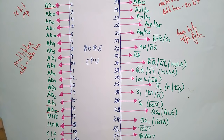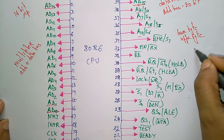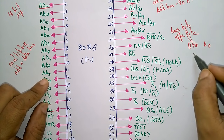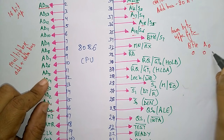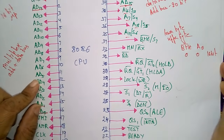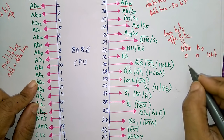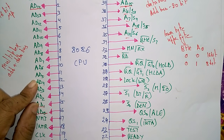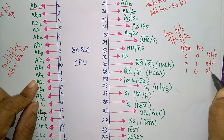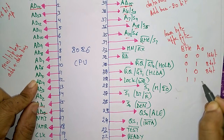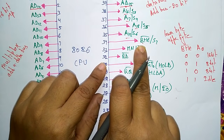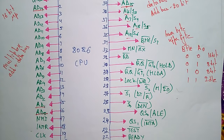Based on BHE-bar and A0: when both are 0, a full 16-bit operation is performed (D0–D15 active); when BHE=0, A0=1, the upper byte D8–D15 is active; when BHE=1, A0=0, the lower byte D0–D7 is active; and when both are 1, the bus is idle.